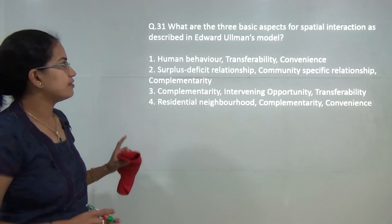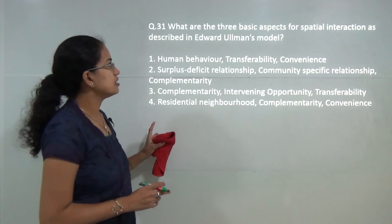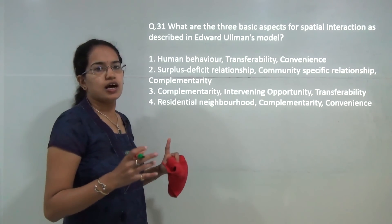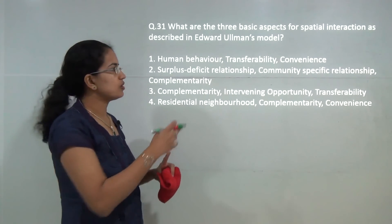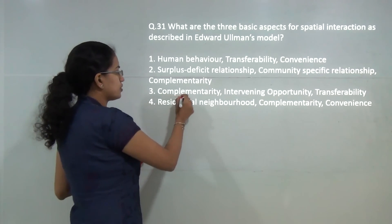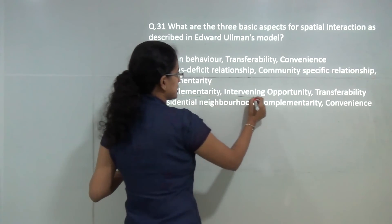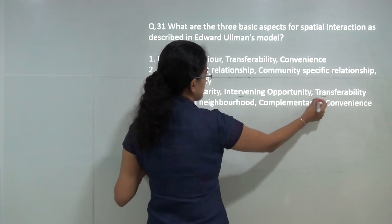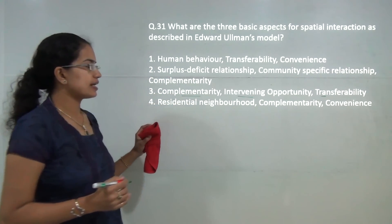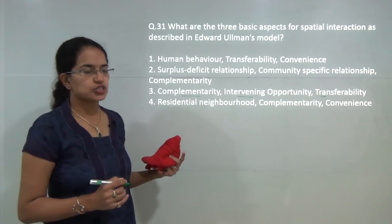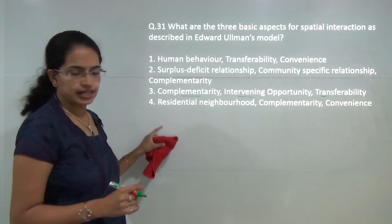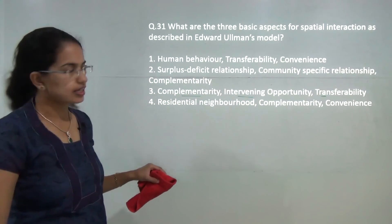The next question is on Ullman's model, which we have also covered in a separate lecture. He talked about 3 basic aspects: transferability, complementarity, and the intervening opportunities that exist. So 3 would be the correct answer in this case.